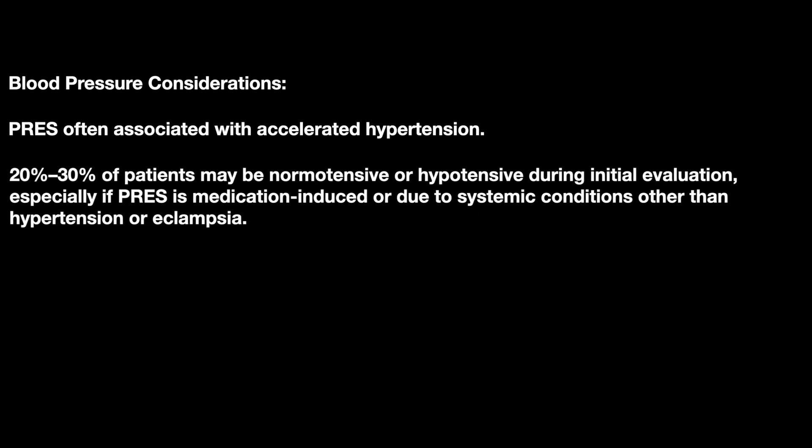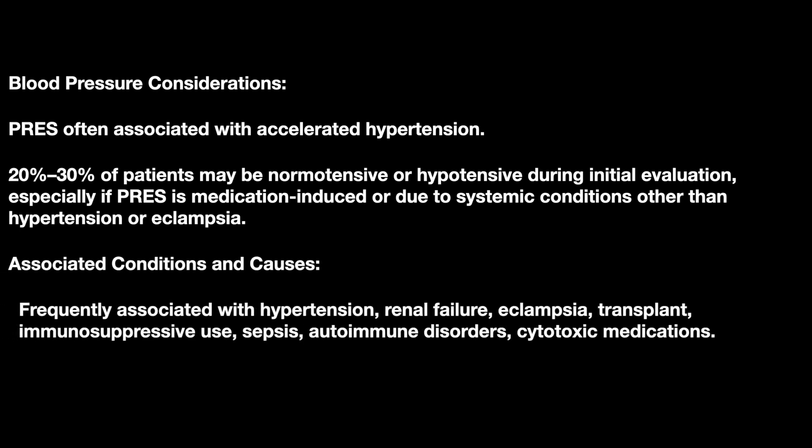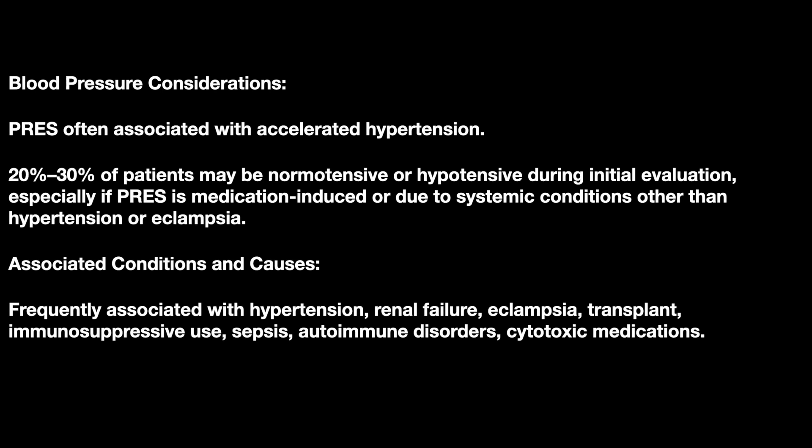Blood pressure consideration is important. PRES is often associated with accelerated hypertension; however, 20% to 30% of patients may be normotensive or hypotensive during initial evaluation, especially if PRES is medication-induced or due to systemic conditions other than hypertension or eclampsia. Associated conditions frequently include hypertension, renal failure, eclampsia, transplant, immune suppression, sepsis, autoimmune disorders, and cytotoxic medications.